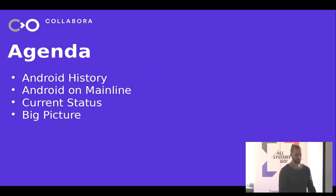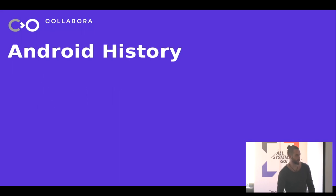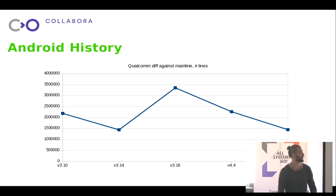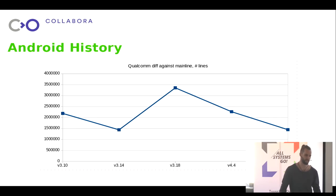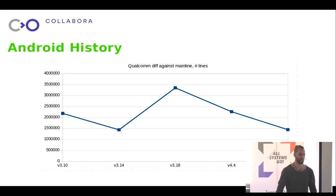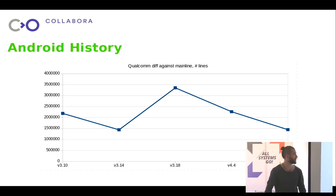We're going to talk about Android history, Android on mainline, and the current status and where we're going from there. The Android history is interesting - this is the number of lines of diff against the mainline kernel that Qualcomm's kernel has. It's between 1.5 and 3.5 million lines of diff for their common kernel. For specific chipsets, it's even larger, and they also ship a kernel branch for every single cell phone shipping.